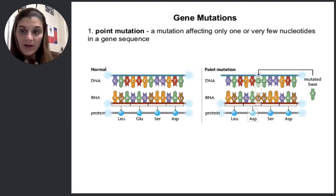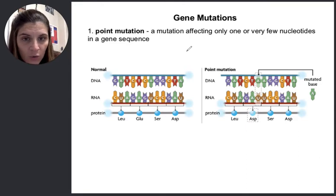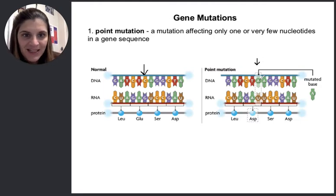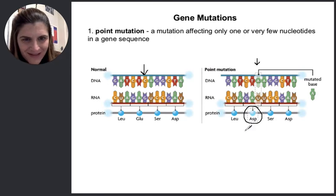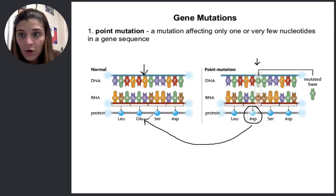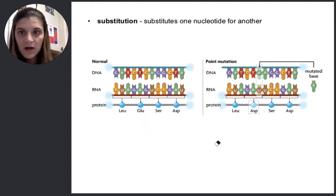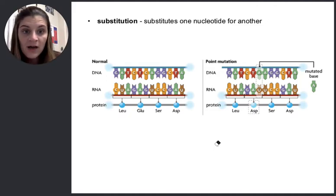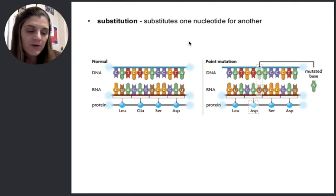Our very first type of gene mutation is what we call a point mutation. This just means that we're only affecting one or very few nucleotides in a gene sequence. Take a look at our picture here. It looks like we are doing what we call a substitution, which means that that C right there got substituted to the letter A, or to an adenine. That's not good because then it's going to get transcribed into RNA and translated into a protein. We've messed up our amino acid — it was supposed to be glutamate and now it's aspartate.